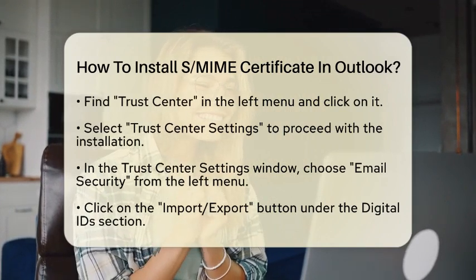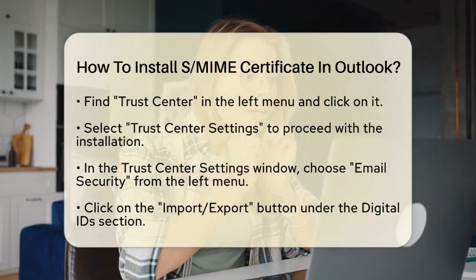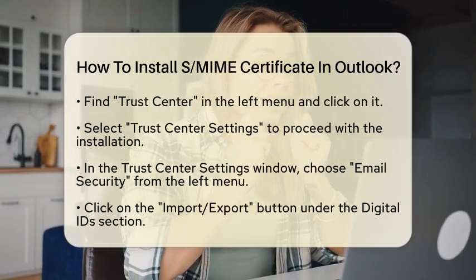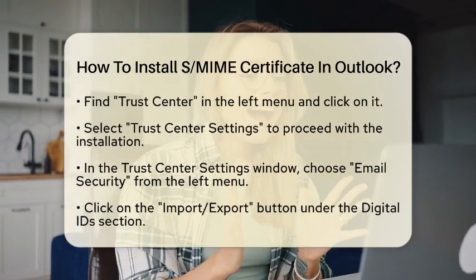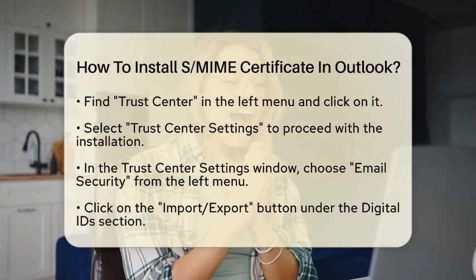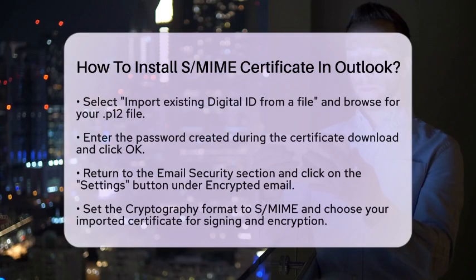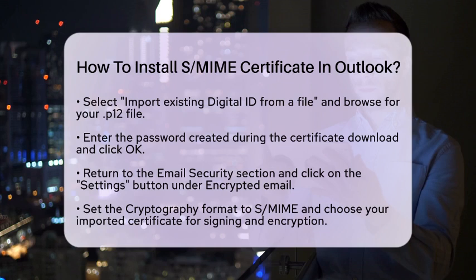Now it's time to import your certificate. Under the Digital ID section, you will find an Import/Export button. Click on this button and select Import Existing Digital ID from a file. Browse to the location where you saved your file, enter the password you created when you downloaded the certificate, and click OK.